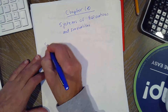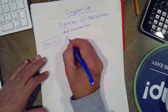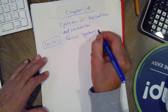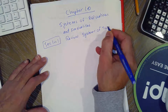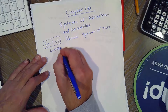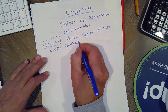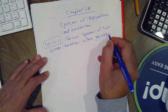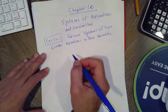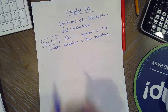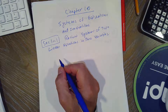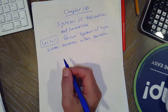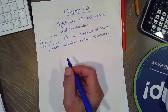In 10.1, I want to review systems of two linear equations in two variables. There are three methods that we discussed in math 1150 linear algebra for solving systems: the graphing method, the elimination method, and the substitution method.